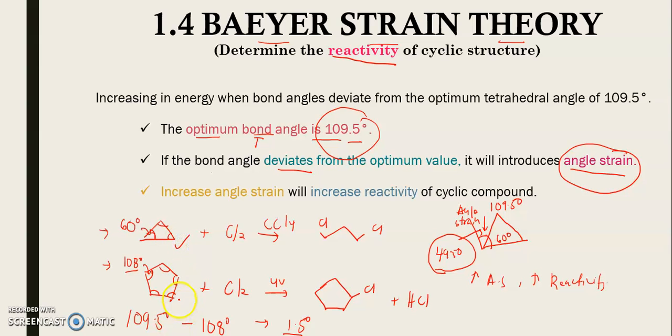Because of that, cyclopentane cannot undergo ring opening reactions because the energy required to break down the bonding is very high due to its stability. You need to relate this to the Bayer strain theory.